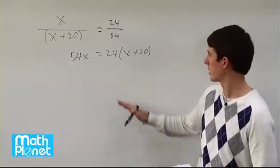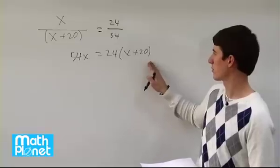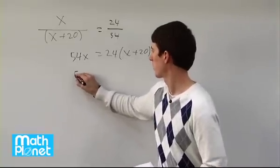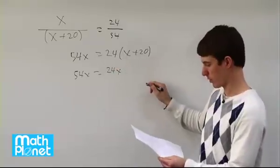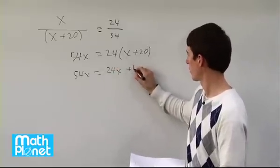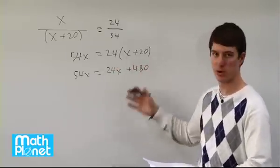Great, so it's already much simpler. Now we need to distribute this 24 through and see what we get. So we still have 54x equals 24x, and then 24 times 20 is 480. You can just do that in the margin of your paper or something.